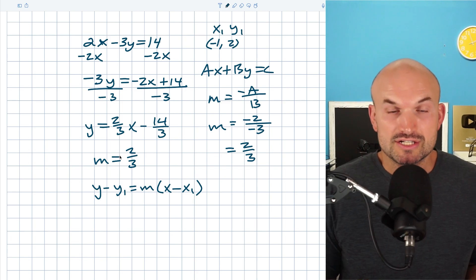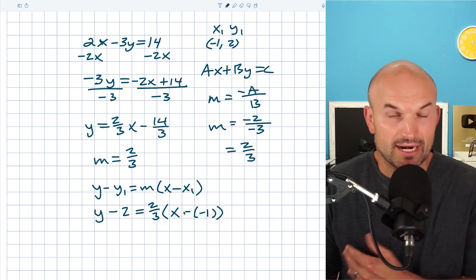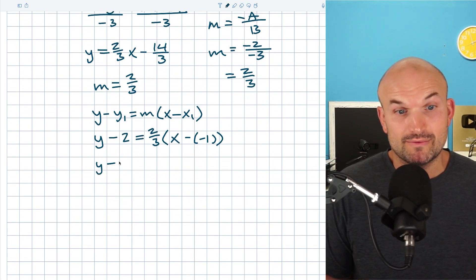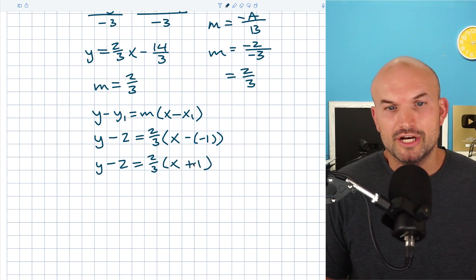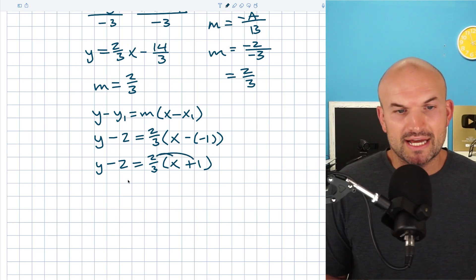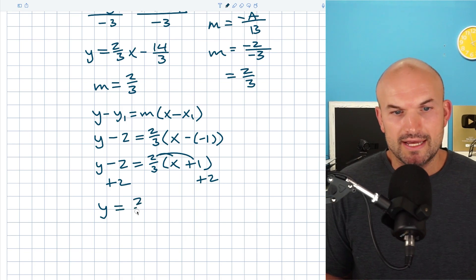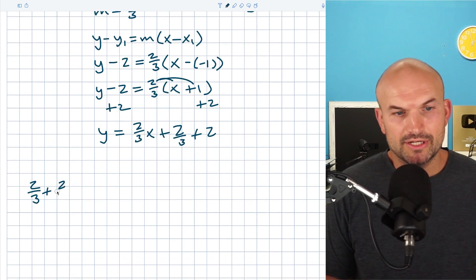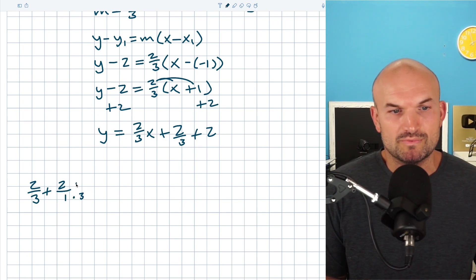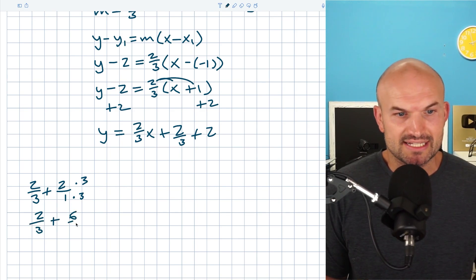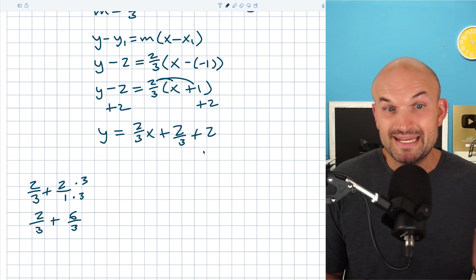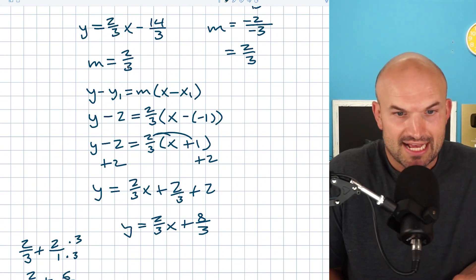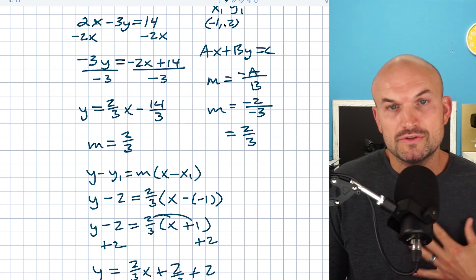Plugging in x₁, y₁, and slope two-thirds into the point-slope formula, it's important to put x₁ (negative one) in parentheses so you're subtracting the negative, which makes it a positive. Then apply the distributive property and add two to the other side: y equals two-thirds x plus two-thirds plus two. Adding two-thirds and two: rewrite two as six-thirds, so two-thirds plus six-thirds is eight-thirds. Therefore y equals two-thirds x plus eight-thirds — that's the equation parallel to the original, with the same slope but a different y-intercept since it passes through (−1, 2).